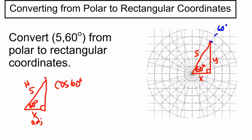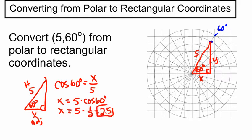Cosine of 60 degrees equals adjacent, which is X, over hypotenuse, in this case, which is 5. And so if I multiply by 5 on both sides, I get X equals 5 times the cosine of 60. Now, I picked a convenient example because I'm familiar with the unit circle. I know that the cosine of 60 is 1 half, so I get X equals 5 times 1 half, which is 2.5. So my X coordinate is 2.5.